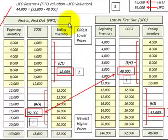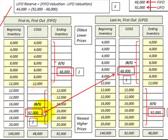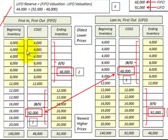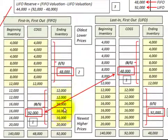Let's continue with our example for our FIFO and LIFO inventory methods and make the comparison between them. We'll be using these same tables, where we have our oldest or lowest priced inventory listed at the top, and as we move down the table we get to our newest and higher priced inventory. So our model is based on increasing prices or increasing costs for inventory.